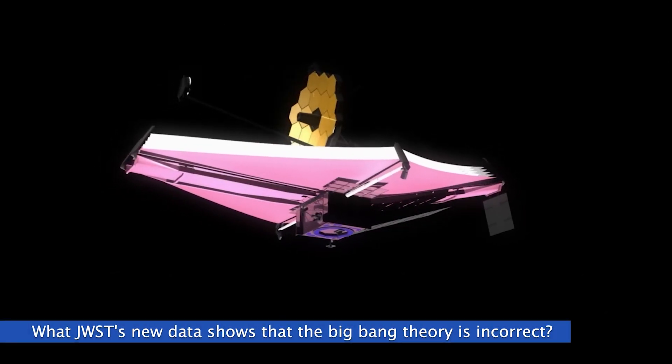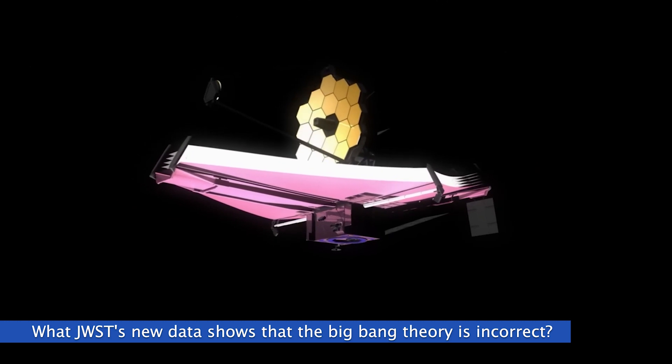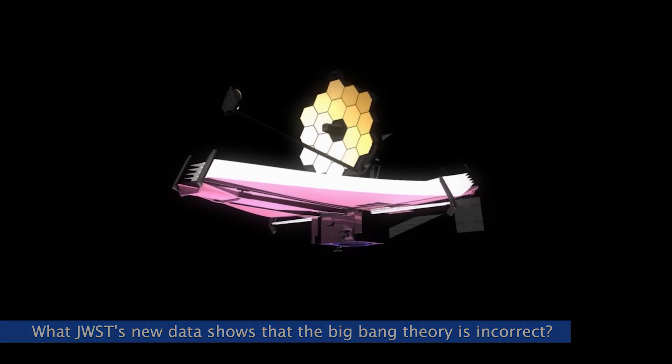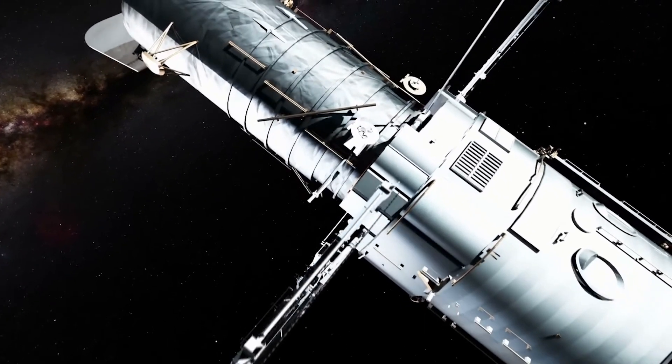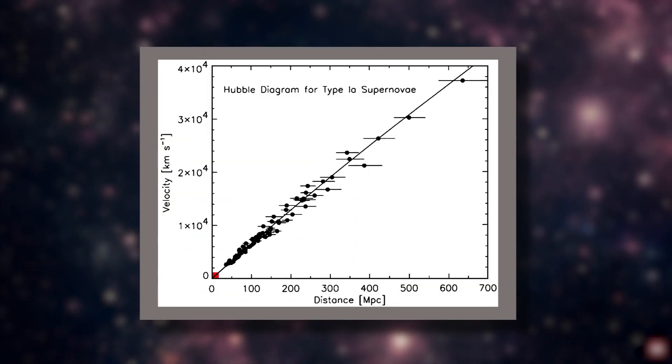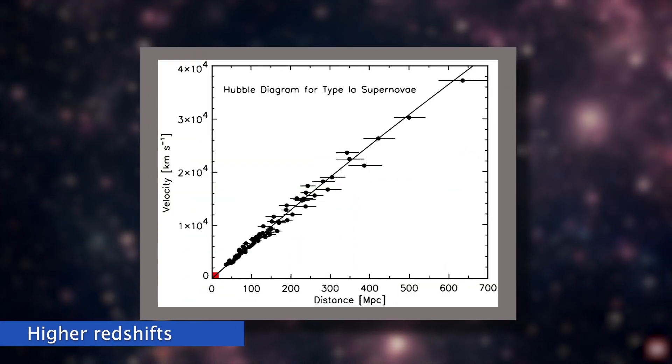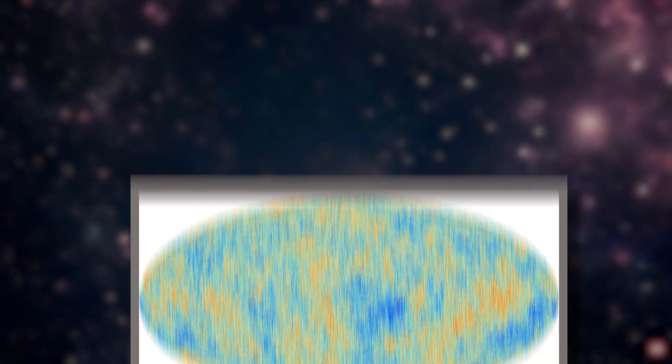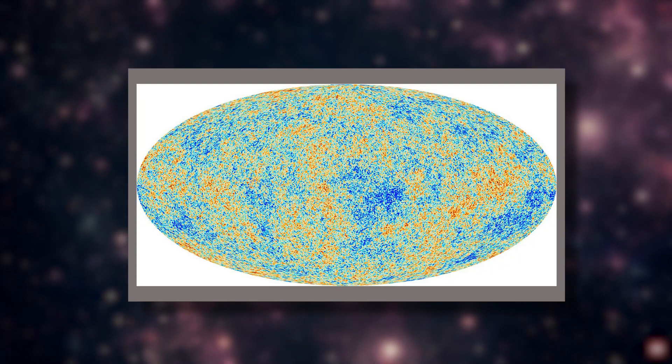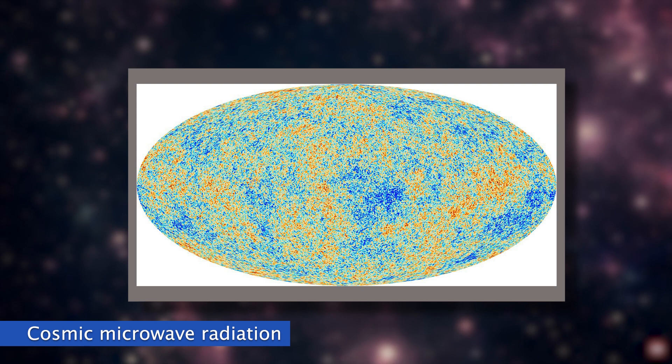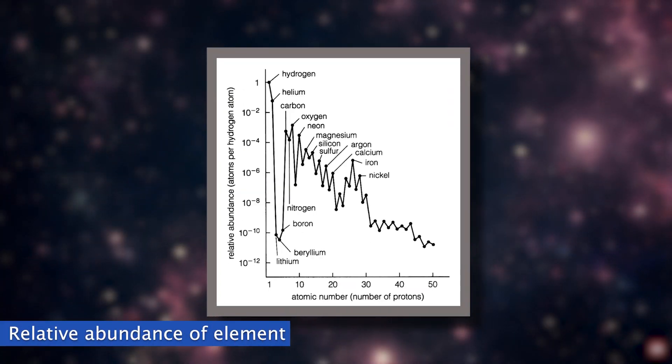What in JWST's new data shows that the Big Bang theory is incorrect? I'm referring to the same information that Hubble supplied years ago. The proof for the Big Bang is often based on these three facts. First, the galaxies farther away have higher redshifts than those closer to us. Second, the universe is saturated with cosmic microwave radiation. And third, the relative abundance of elements in the early cosmos.